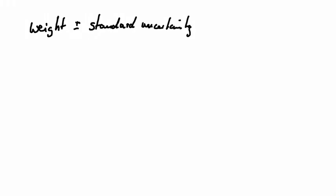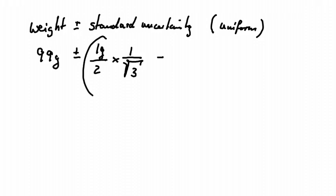And we can indicate that we used a uniform distribution. Now it's always good to write that down so that people are absolutely clear about it. So we had 99 grams plus minus half of the resolution, so that would be 1 gram divided by 2 times 1 over square root of 3. And it's always square root of 3 for a uniform distribution. And if we put that into a calculator, we get for this 0.288 grams.